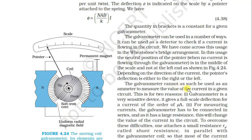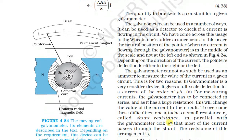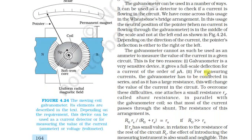The galvanometer cannot be used as an ammeter to measure the value of current in a given circuit for two reasons. First, the galvanometer is a very sensitive device — it gives full-scale deflection for a current of the order of microamperes. Second, for measuring current the galvanometer has to be connected in series and it has a large resistance, which would change the value of current in the circuit.